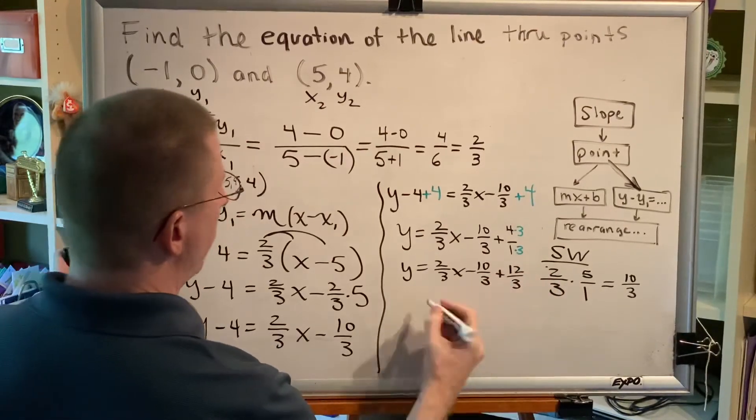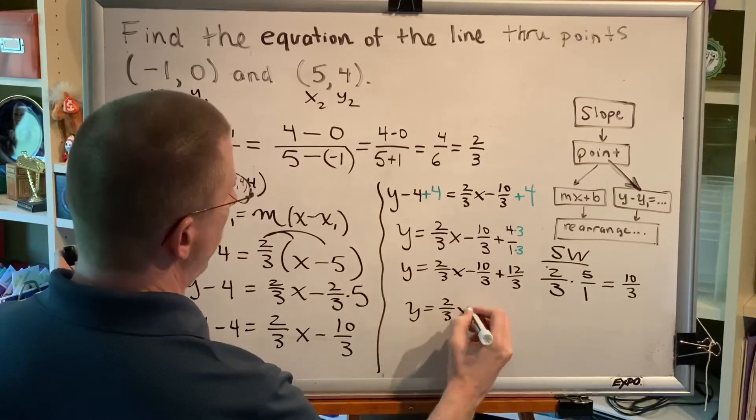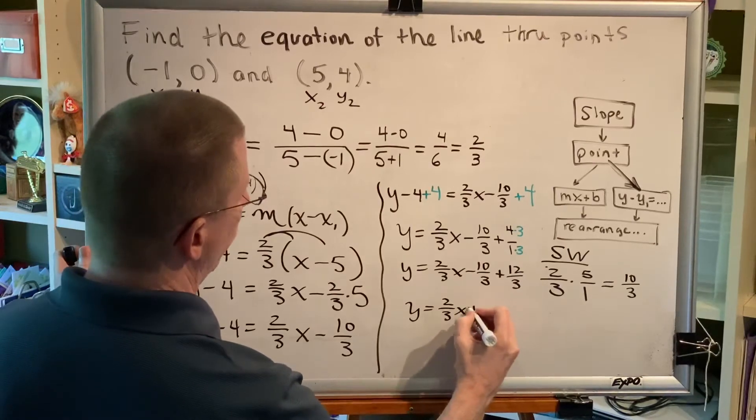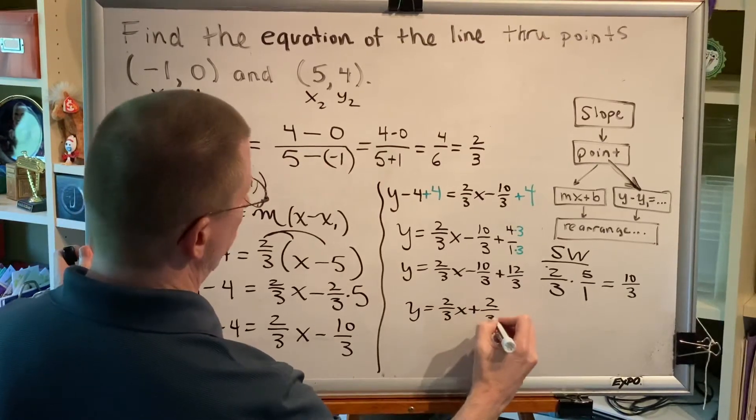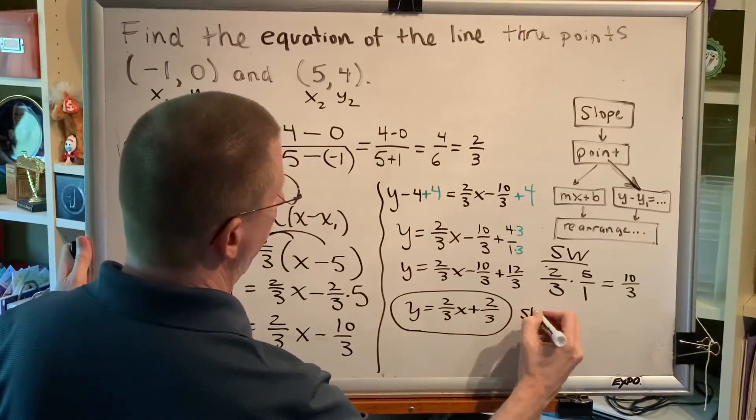Now that these have a common denominator we can add the fractions. So we get y equals 2/3 x, negative 10 plus 12 is plus 2, so plus 2/3. This is the equation of our line in the slope-intercept form.